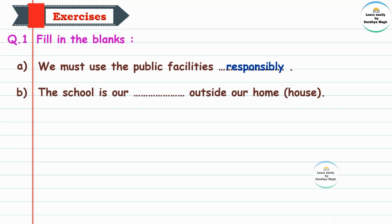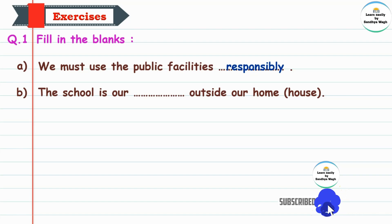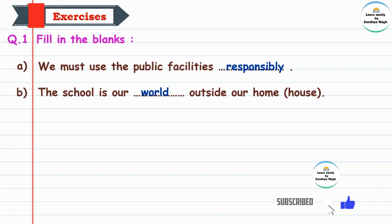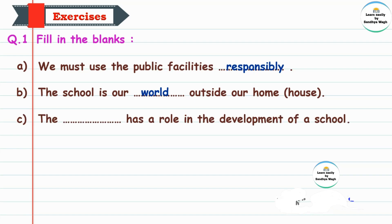Fill in the blank (b): The school is our — outside our home. Our school is like our world outside our home. Answer: The school is our world outside our home.